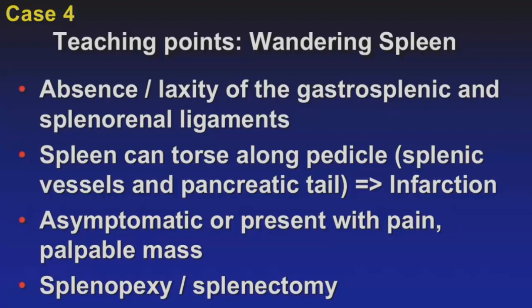This is a diagnosis of a wandering spleen — occurring when there is absence or laxity of the gastrosplenic and splenorenal ligaments. The spleen can torse along the long pedicle composed of the splenic vessels and pancreatic tail, rendering it at risk for infarction. Patients can be asymptomatic, present with pain, or have a palpable mass from the spleen in an abnormal location. Treatment is splenopexy, or splenectomy if the spleen has infarcted.